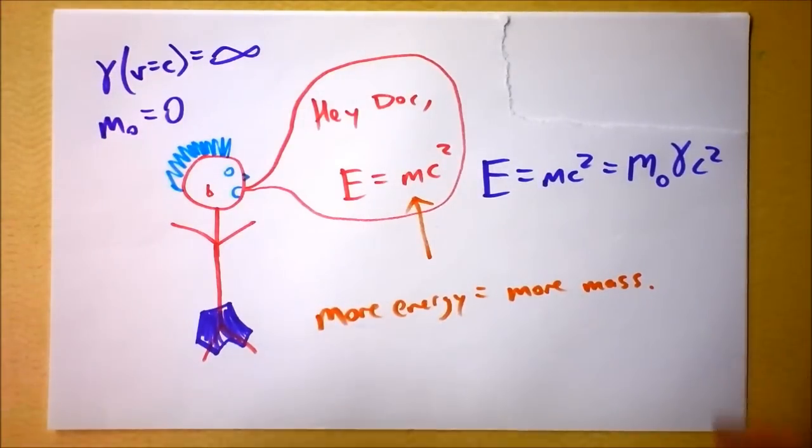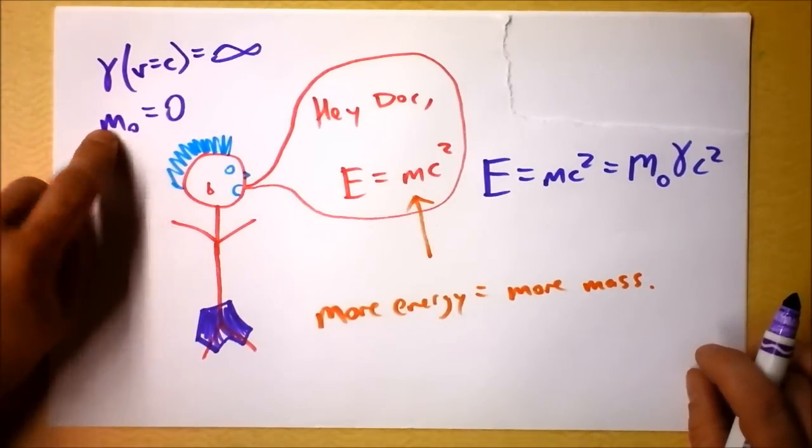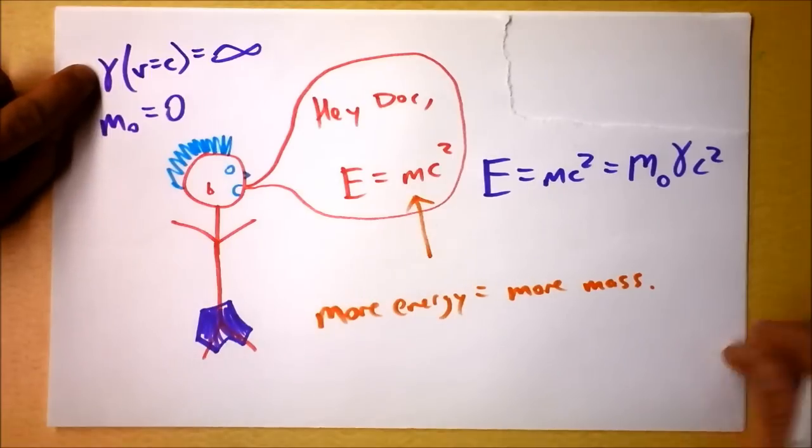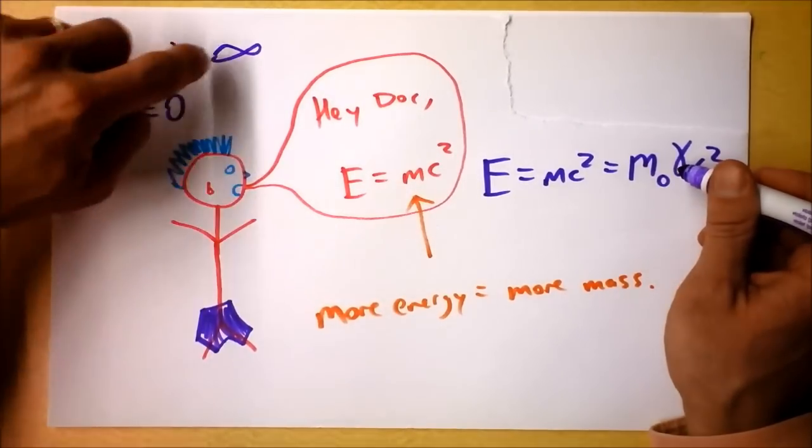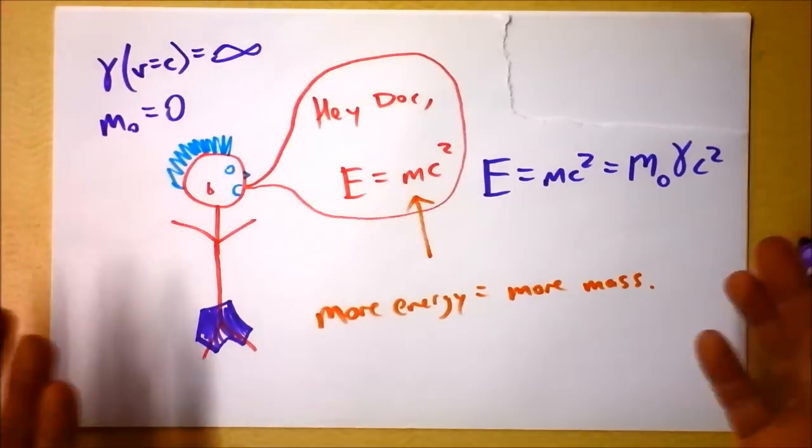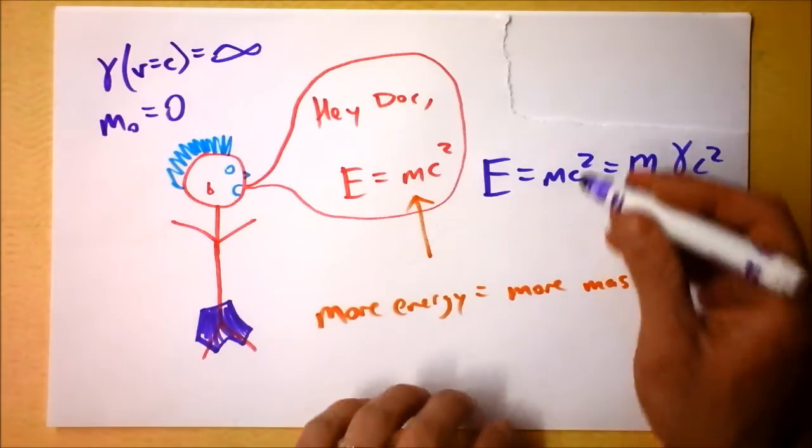So the cool thing is, if you multiply the mass of light, the rest mass of light, by the Lorentz transformation factor gamma of light, which is infinity, you're gonna get a pleasant energy. That's great. So that's why light has energy, even though it doesn't have mass.